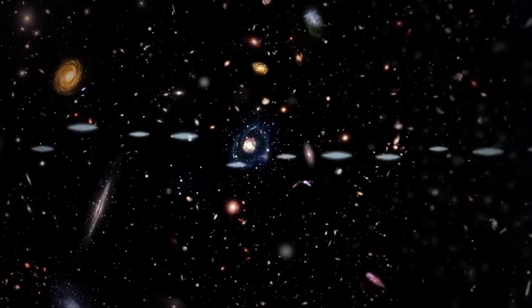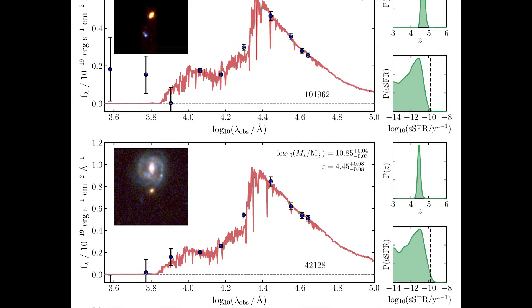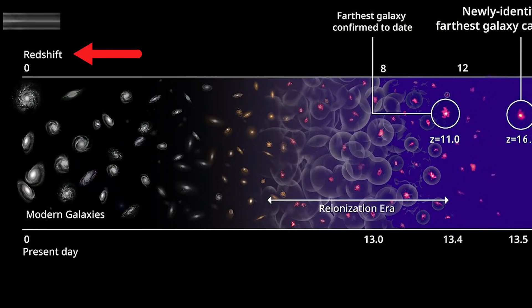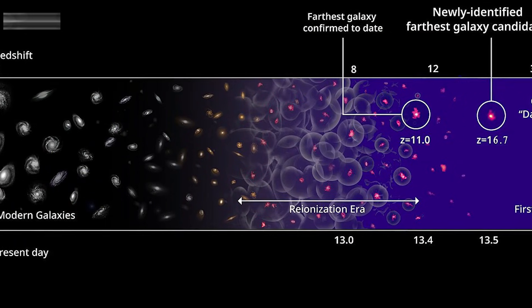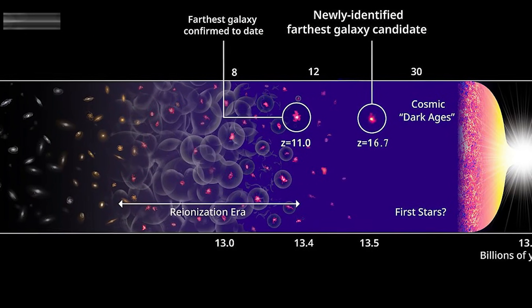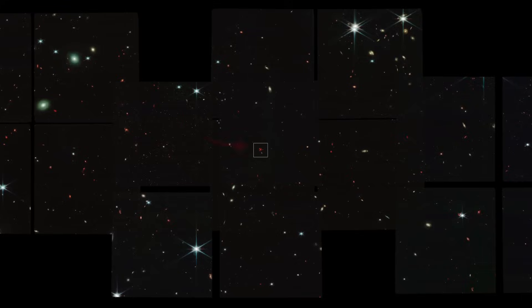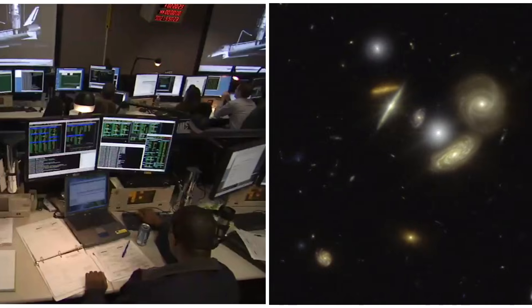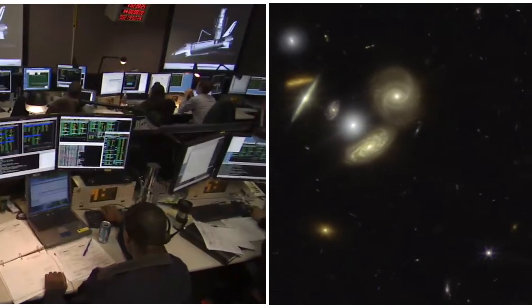The James Webb Space Telescope has uncovered even more strange phenomena. Scientists have detected something very unusual in the early universe for the first time. Some of these findings are so unusual that they are challenging our understanding of cosmic expansion, raising questions about whether it is real or just an illusion.